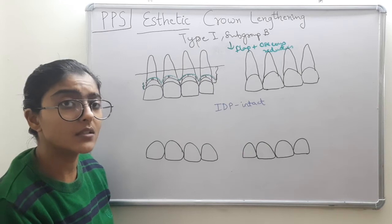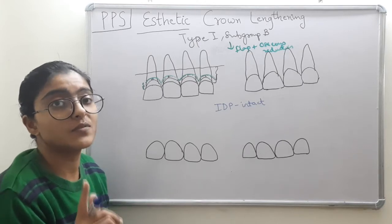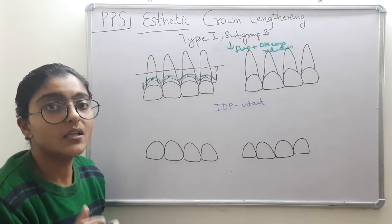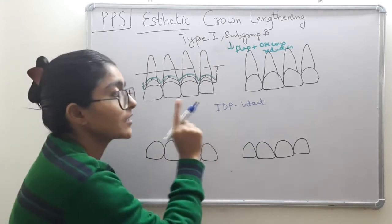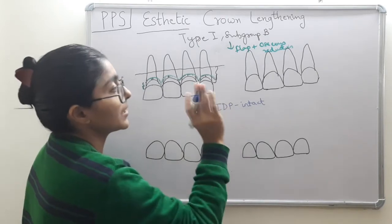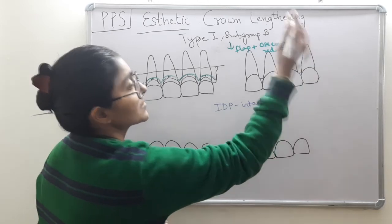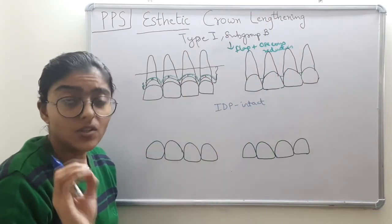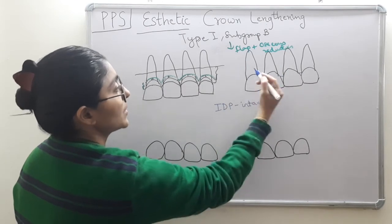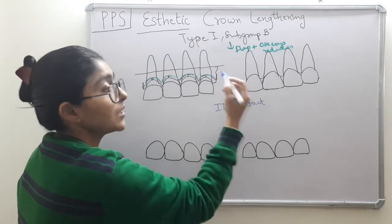Black triangles are caused by periodontal disease and also by its treatment — post-flap surgery, interdental tissues shrink and recede apically during healing. Because we are performing an aesthetic procedure, our aim must be to keep the interdental papillae completely intact. We are literally not going to touch them.